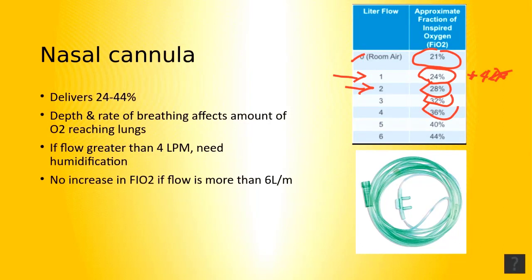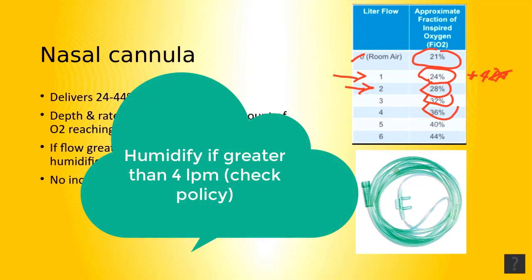A humidification device is recommended for flows greater than 4 liters per minute in order to ensure humidification of the dry inspired gas. Even with humidity, however, flows of 6 to 8 liters per minute can still cause nasal dryness and bleeding.